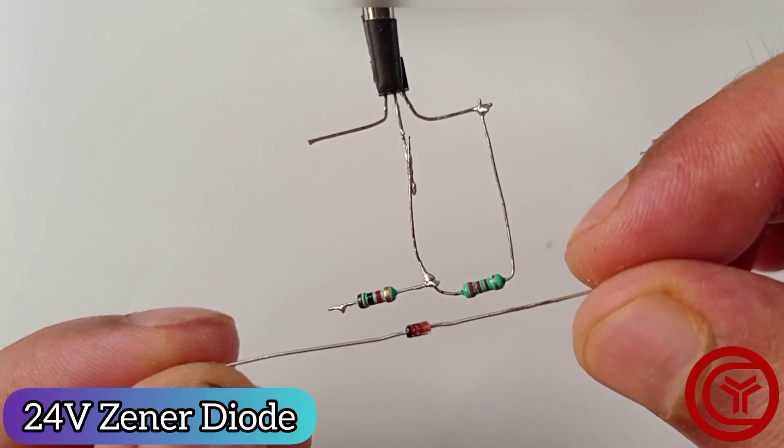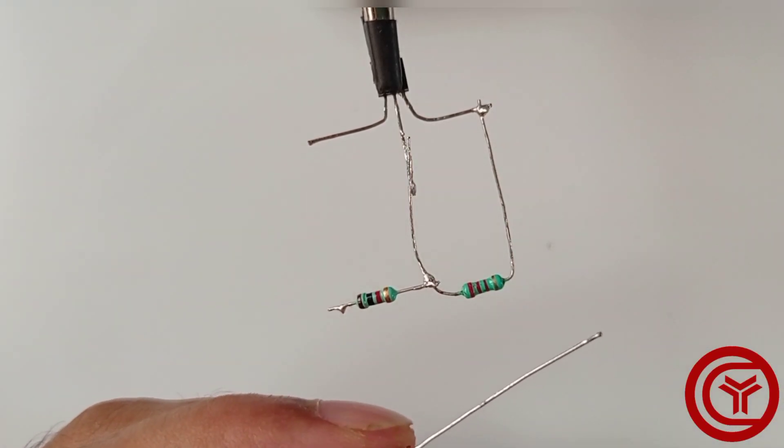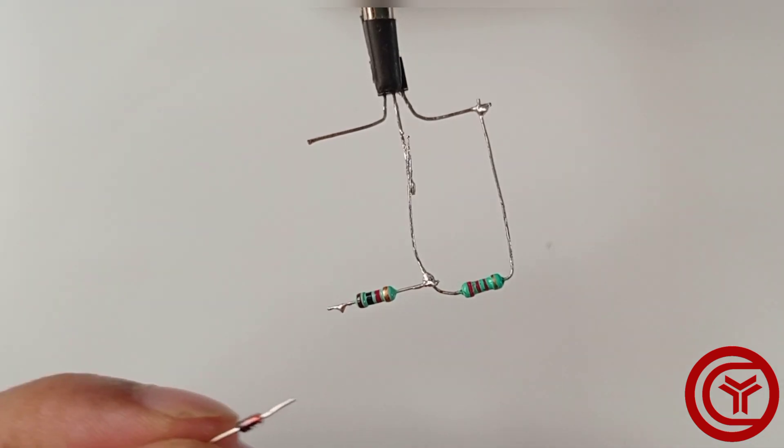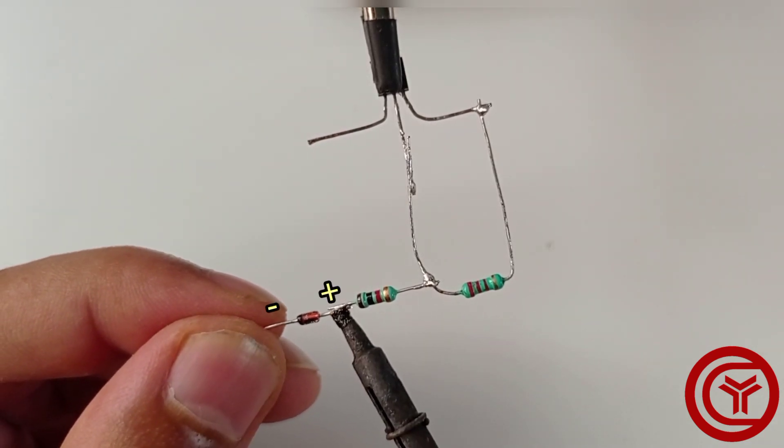Now we take a 24V Zener diode and cut excess lead. Solder Zener positive side with 1k resistor.